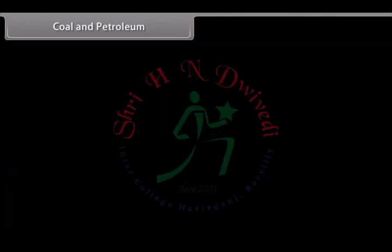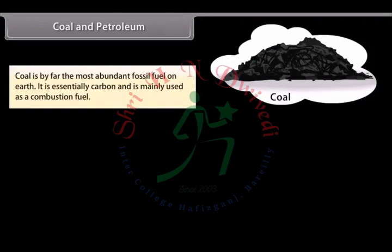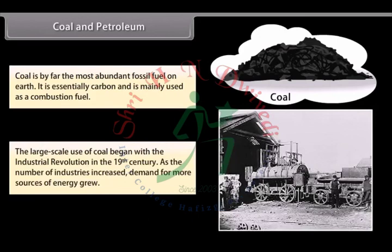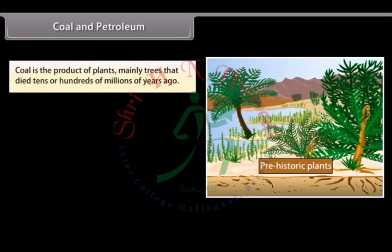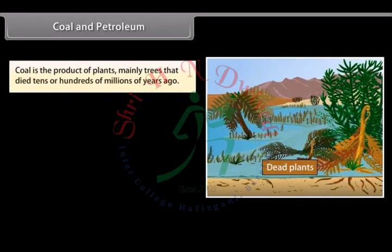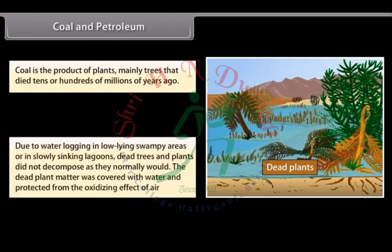Coal and Petroleum: Coal is by far the most abundant fossil fuel on earth. It is essentially carbon and is mainly used as combustion fuel. The large-scale use of coal began with the industrial revolution in the 19th century. Coal is the product of plants — mainly trees — that died tens or hundreds of millions of years ago, due to waterlogging in low-lying swampy areas or in slowly sinking lagoons.